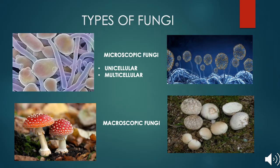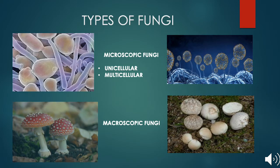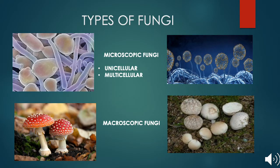Fungi can be unicellular or multicellular. They are classified into two broad categories: microscopic and macroscopic. Microscopic fungi may include unicellular as well as multicellular fungi, whereas macroscopic includes only multicellular fungi. For example, yeast is a unicellular fungus, the cottony growth on bread is an example of multicellular microscopic fungi, whereas mushrooms and puffballs are macroscopic because they are big enough to be seen with the naked eye.